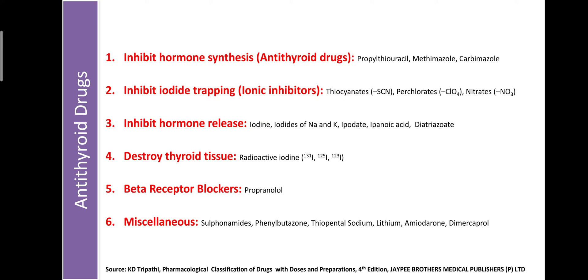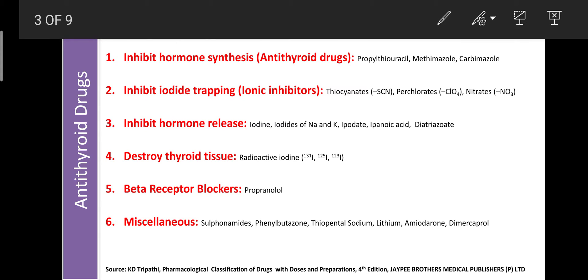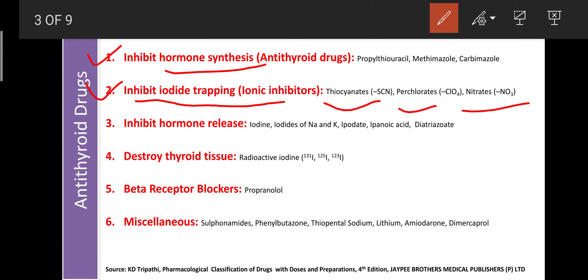Classification of antithyroid drugs: these drugs antagonize the activity of thyroid hormones and are classified into six classes. The first class inhibits hormone synthesis — also known as antithyroid drugs proper — examples include propylthiouracil, methimazole, and carbimazole. These drugs mainly inhibit the synthesis of thyroid hormones T3 and T4. The second class inhibits iodide trapping — known as ionic inhibitors — examples are thiocyanates, perchlorates, and nitrates.